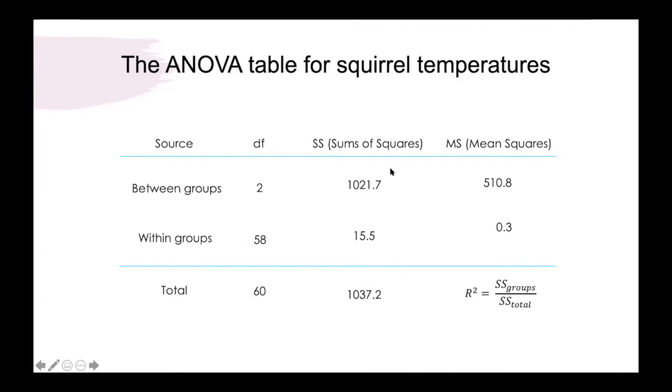The proportion of the total that's explained by the between group factor can be used as a measure of this R-squared value. So in this case we can calculate our R-squared as 0.985 or 98.5 percent of the variation in ground squirrel body temperatures could be explained by the experimental treatments that these individuals were exposed to.